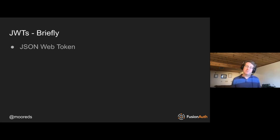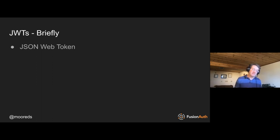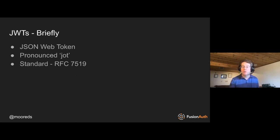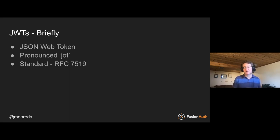Let's cover some brief basics about JSON Web Tokens. They are JSON — a way of representing JSON in a standardized and portable manner. It's actually pronounced 'JOT.' It is an IETF standard; RFC 7519 is the main one, with three or four others clustered around the same time. It's been around since about 2015. It's part of a standards body — they've reviewed it, and it should be relatively interoperable.